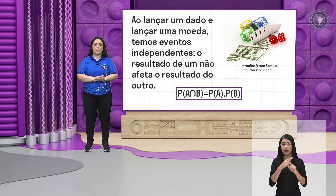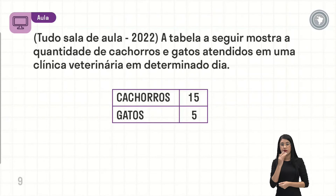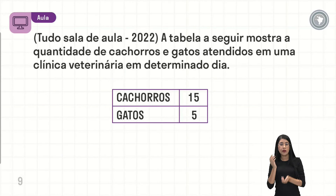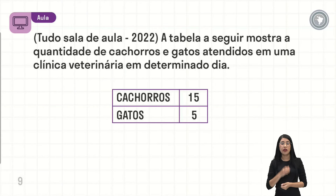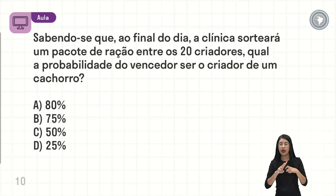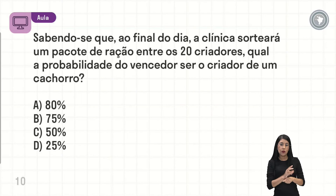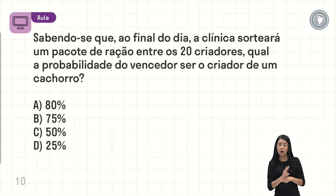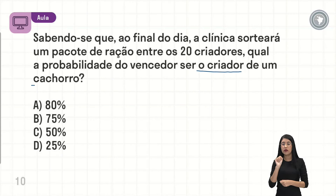Agora a gente vai ver mais exemplos. A tabela a seguir mostra a quantidade de cachorros e gatos atendidos em uma clínica veterinária em determinado dia. A gente tem 15 cachorros sendo atendidos e 5 gatos sendo atendidos. Sabendo-se que ao final do dia a clínica sorteará um pacote de ração entre os 20 criadores, qual a probabilidade do vencedor ser o criador de um cachorro?